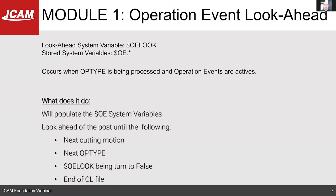For the operation event, this occurs when you have the operation event procedure active. Every time you have the opt-type major word in your CL file, it will trigger the operation event and populate the $OE system variables. Those variables have a prefix $OE followed by a dot and then the variable name — they are automatically populated by the post without requiring you to set them. The lookahead will continue until it finds either the next cutting motion or the next opt-type.